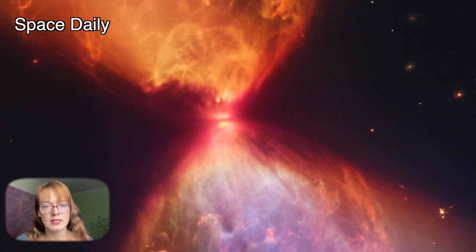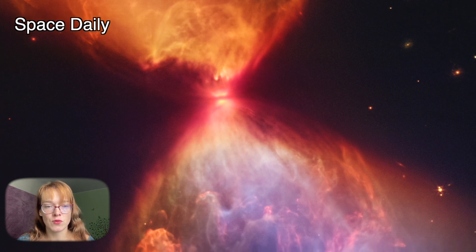The disk seen in the image as a dark band in front of the bright center is about the size of our solar system. Given the density, it's not unusual for much of this material to stick together to form the rudiments of planets.